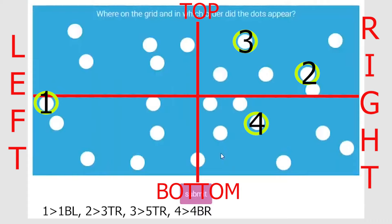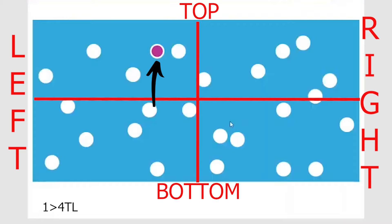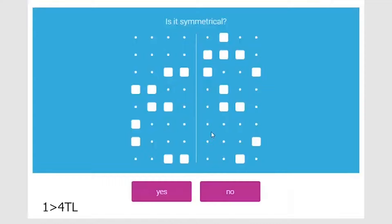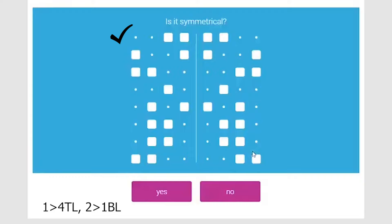Going to the next level: first memory question — the dot is in the top left quadrant at the fourth position, so '4TL.' Spatial question — line one is not symmetrical, so no. Second memory question — dot at first position of bottom left corner. Symmetry check — lines one through four are all symmetrical, so yes.